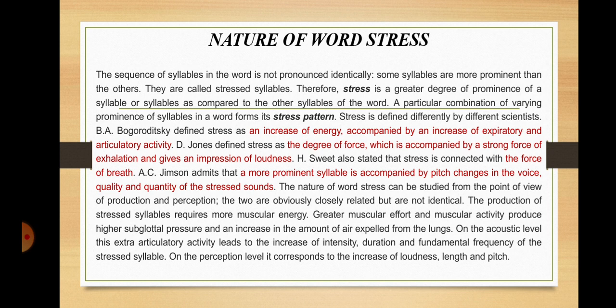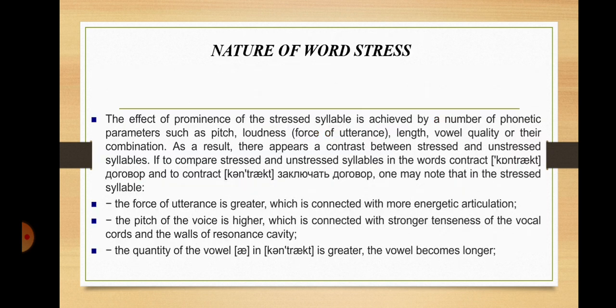The nature of word stress can be studied from the point of view of production and perception. The two are obviously closely related but not identical. The production of stressed syllables requires more muscular energy. Greater muscular effort produces higher subglottal pressure and an increase in the amount of air expelled from the lungs. On the acoustic level, this extra articulatory activity leads to an increase of intensity, duration, and fundamental frequency of the stressed syllable. On the perception level, it corresponds to an increase of loudness, length, and pitch. The effect of prominence is achieved by phonetic parameters such as pitch, loudness, length, vowel quality, or their combination.